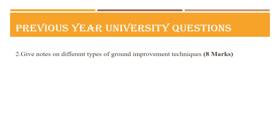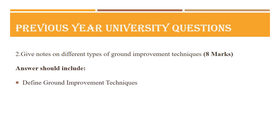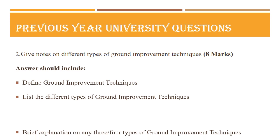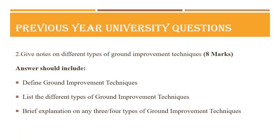The second question is: give notes on different types of ground improvement techniques, asked for eight marks. First, define ground improvement techniques. Then list the different types such as grouting, hydraulic modification, compaction or mechanical modification, and ground freezing. After that, give a brief explanation of any three or four types with neat sketches.